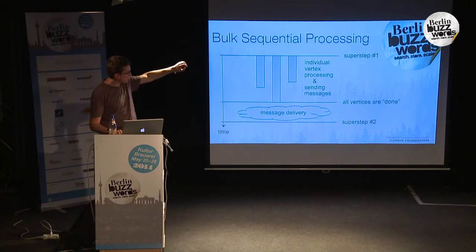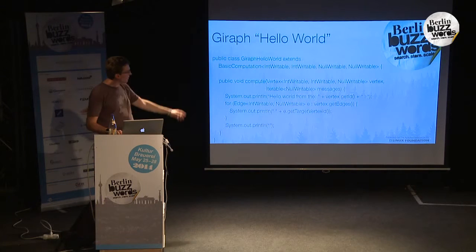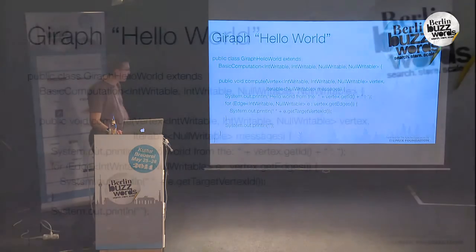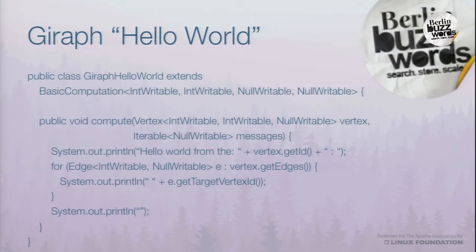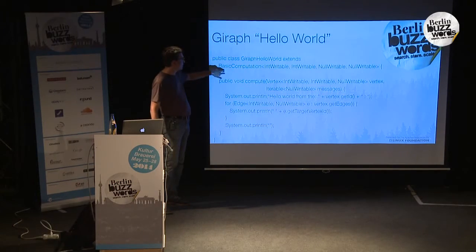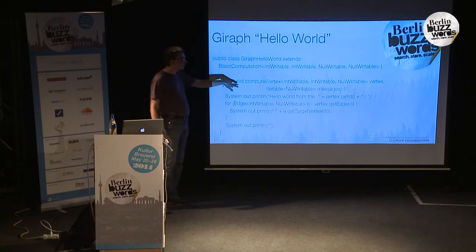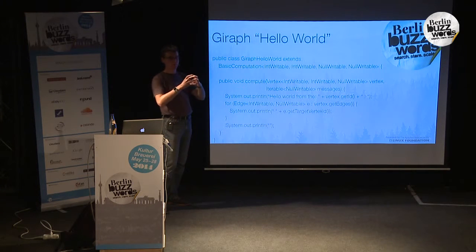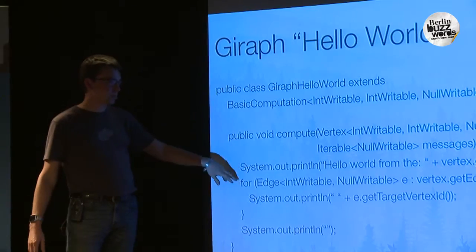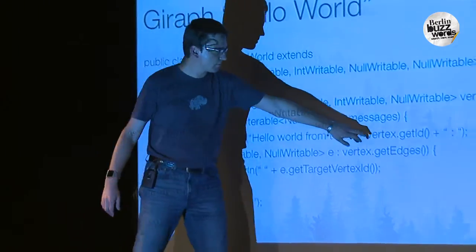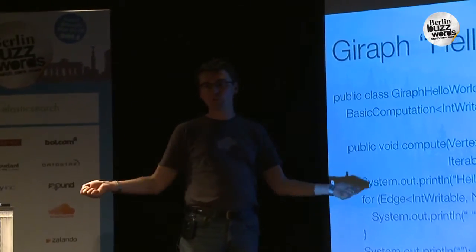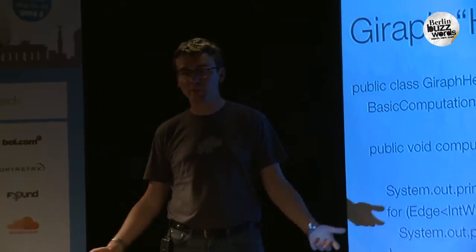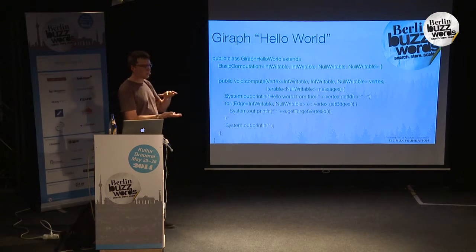BSP happens at the level of individual vertices, then there's message delivery, and it keeps going. Here is the first Giraph hello world. This snippet shows that Java makes you write tons of boilerplate, but the real bit happens here. We've extended the BasicComputation abstract class, which is the entry point for writing anything in Giraph. The only method you have to redefine is compute — what happens at the level of each individual vertex. Within compute you can print your ID, then iterate over all outgoing edges printing the IDs of neighbors you're connected to. This is basically the smallest thing you can do with Giraph.